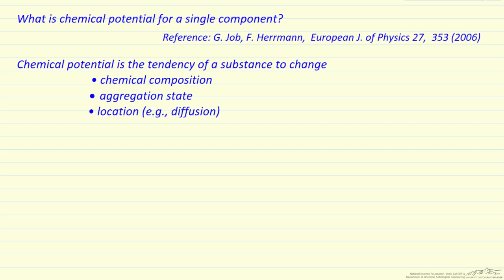In this screencast I'm going to discuss chemical potential for a single component. We're interested in chemical potential because it's the tendency of a substance to change composition, aggregation state meaning different phases such as liquid versus gas, or location — for example, something diffuses from high concentration to low concentration. It's important in order to predict the direction of mass transfer, because mass transfer goes from high chemical potential to low chemical potential.